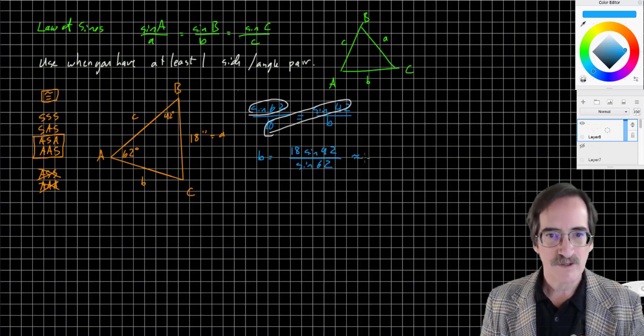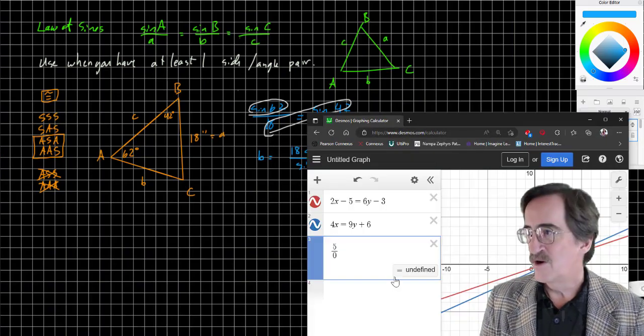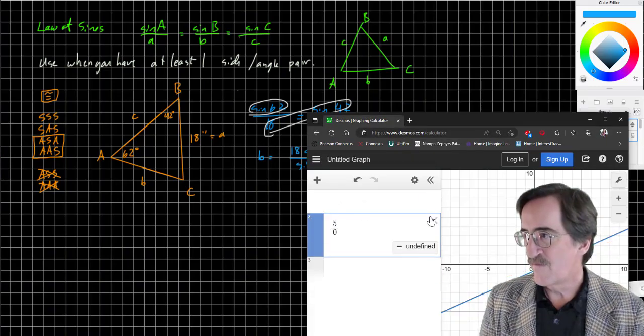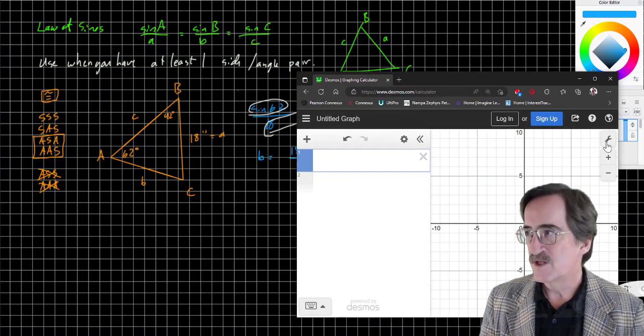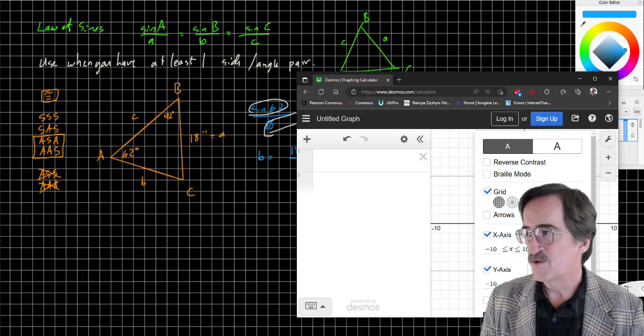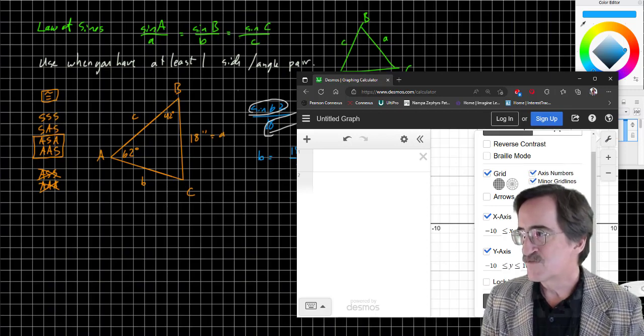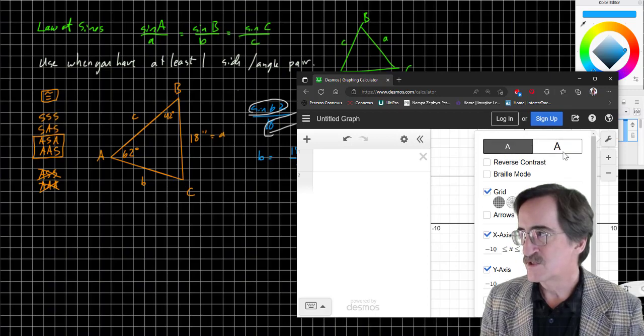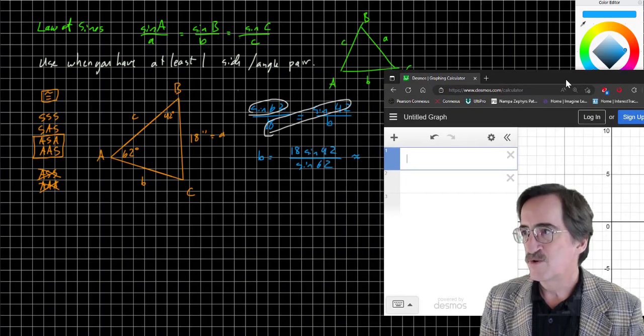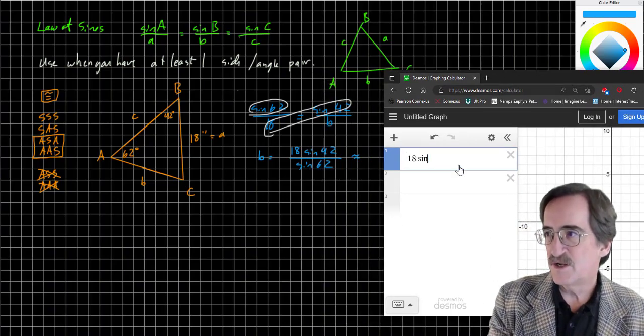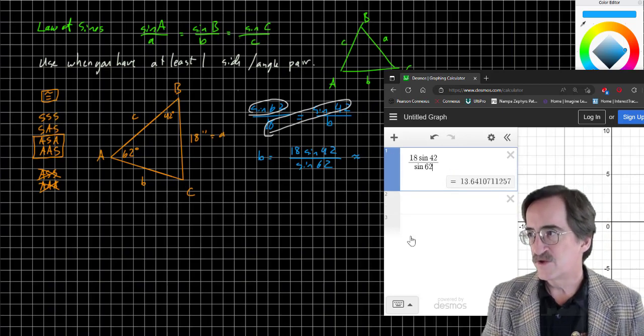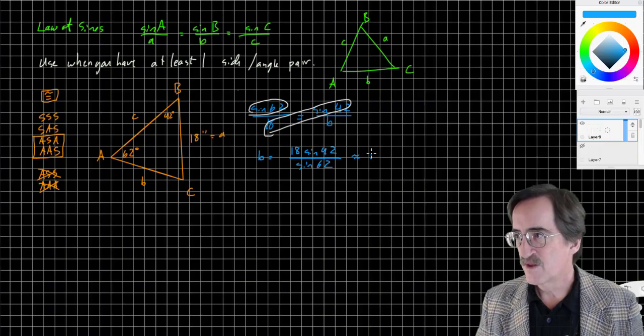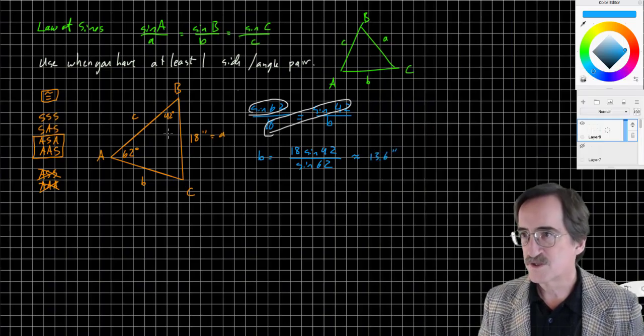Let's get Desmos up here. One of the things we need to be aware of is Desmos defaults to radians. We are not in radian mode here, we are in degree mode. Let's make sure our calculator is set to degrees. Anytime we deal with sine, cosine, and tangent, you've got to know which mode you're working with. So 18 sine 42 all divided by sine 62, and I get about 13.6 inches. That's B.